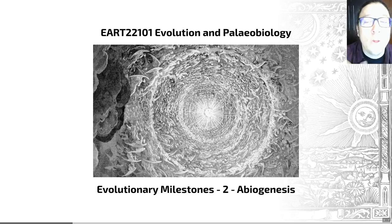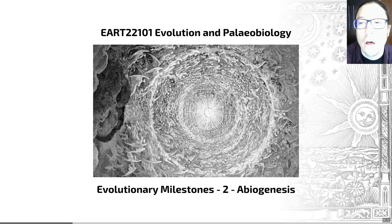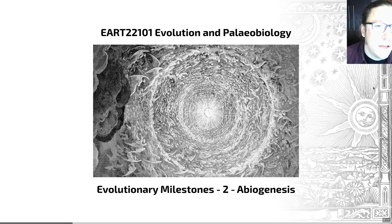Hello everybody and welcome to video number two of evolutionary milestones, in which we're going to look at the origins of the material, where it came from, that life requires on earth. We're going to look at some processes by which abiogenesis — that is, the origin of life — may have occurred. So let's jump right on in.